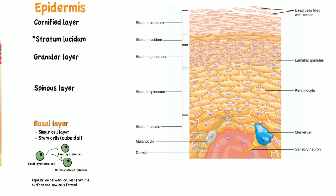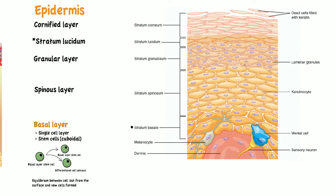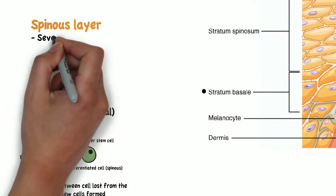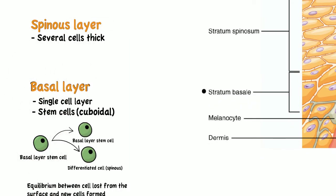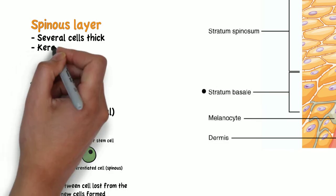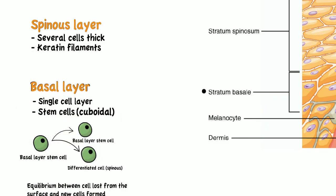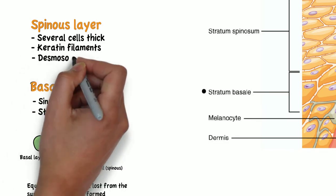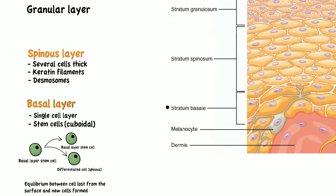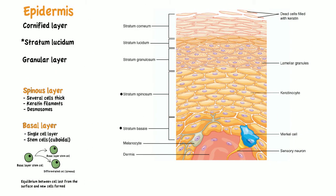The next layer is the spinous layer. It is several cells thick and the cells in this layer present keratin filaments and desmosomes, which link them to adjacent cells. These differentiated cells are no longer capable of division.